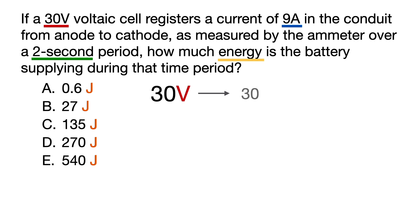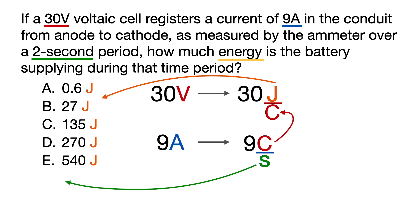Well, volts is a unit that always breaks open into joules per coulomb. And right away, we see that we have joules, which is needed in our answers. And amps is a unit that always breaks open into coulombs per second. And we see that we have the coulombs that was in our volts unit, and we have seconds in the question stem.